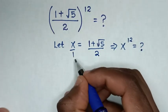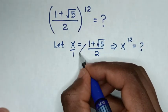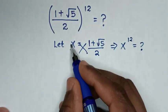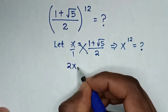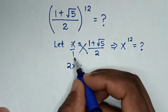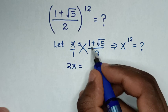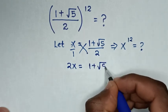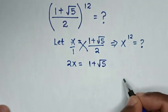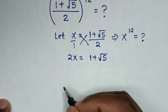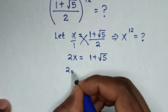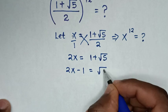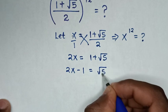So from this, x is the same as x over 1, then we'll cross multiply: 2x is equal to 1 times (1 plus square root of 5), which is 1 plus square root of 5. Then we take 1 to the left side, so it will be 2x minus 1 is equal to square root of 5.